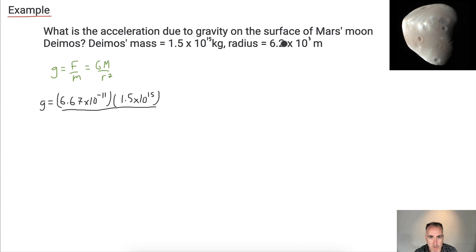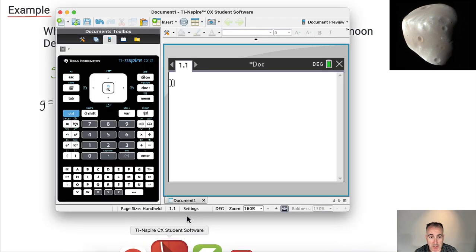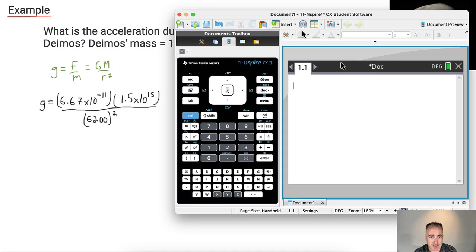Divide that by the radius squared. So 6.2 times 10 to the 3 is just the same thing as 6,200. But don't forget to square it. That's a big mistake that people make.